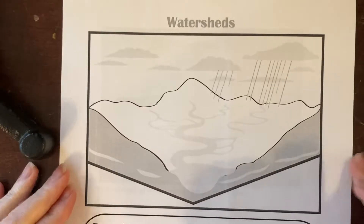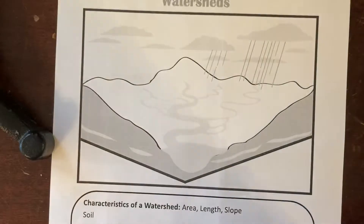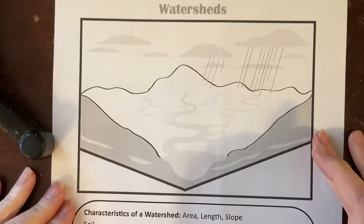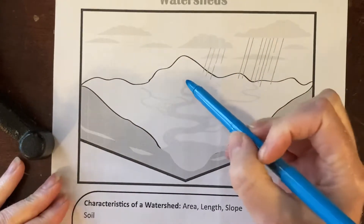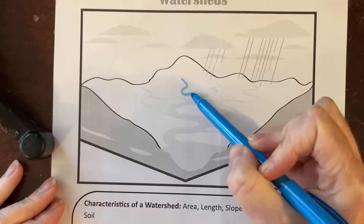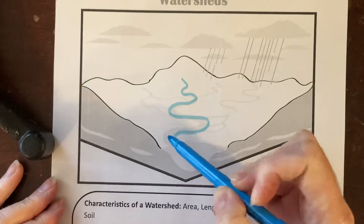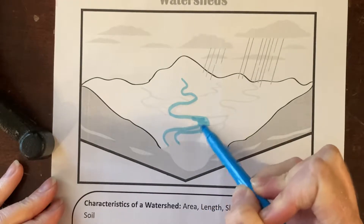Let's go ahead and mark some things down for watersheds. It's really important to understand where the water is, so I'm just going to use a blue highlighter — colored pencils or crayons are fine too. Let's go ahead and color in the river on your black and white copy.